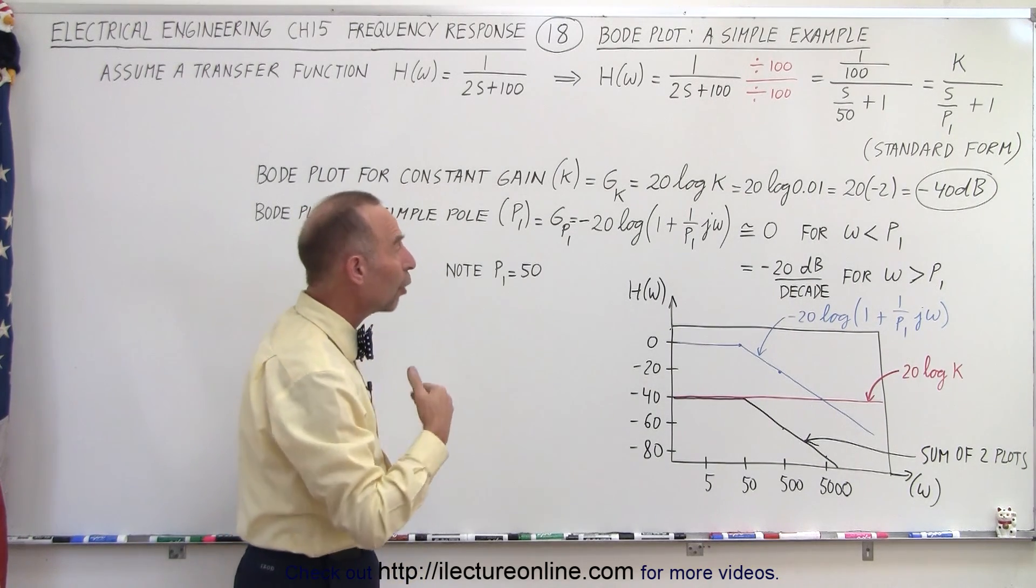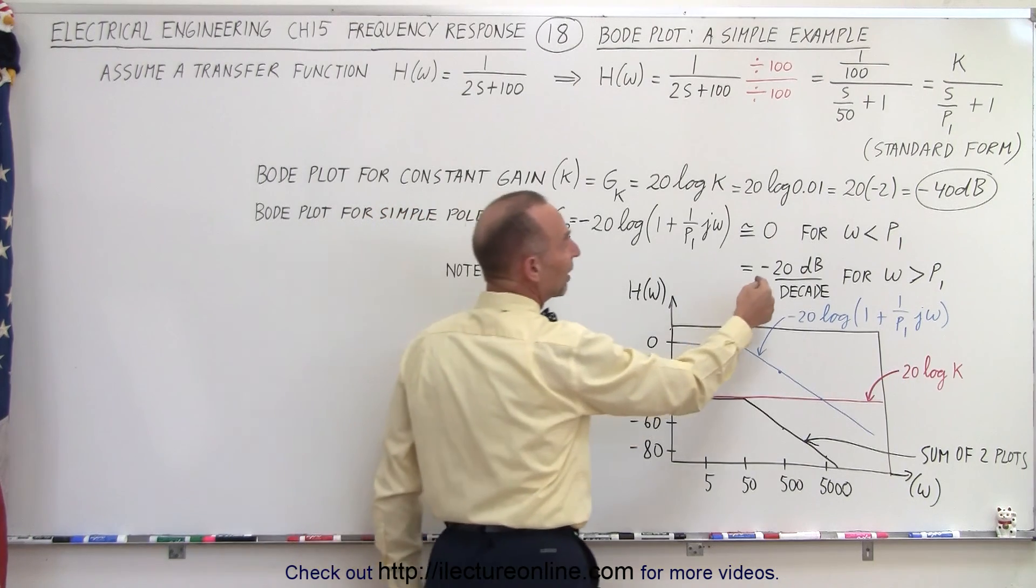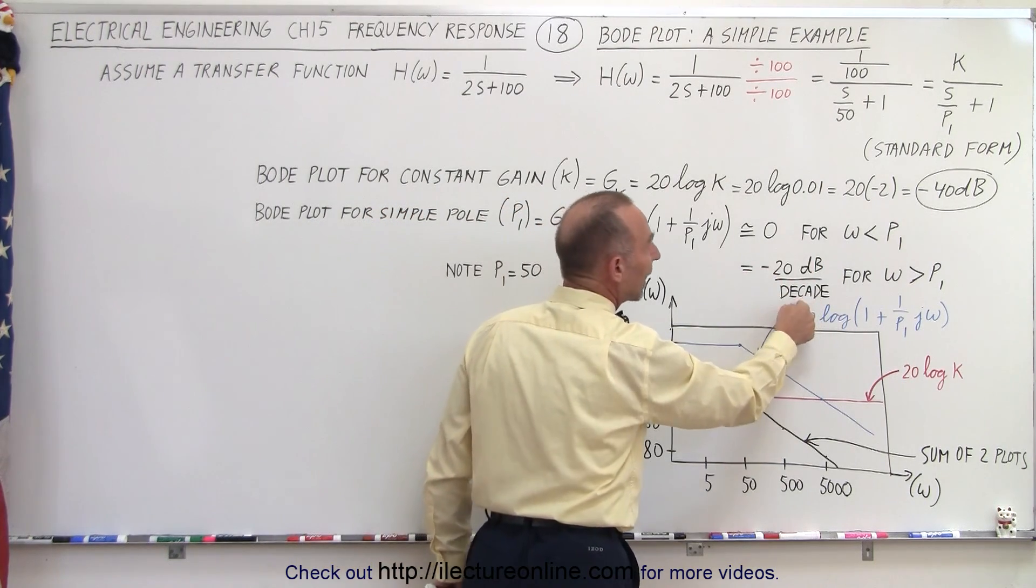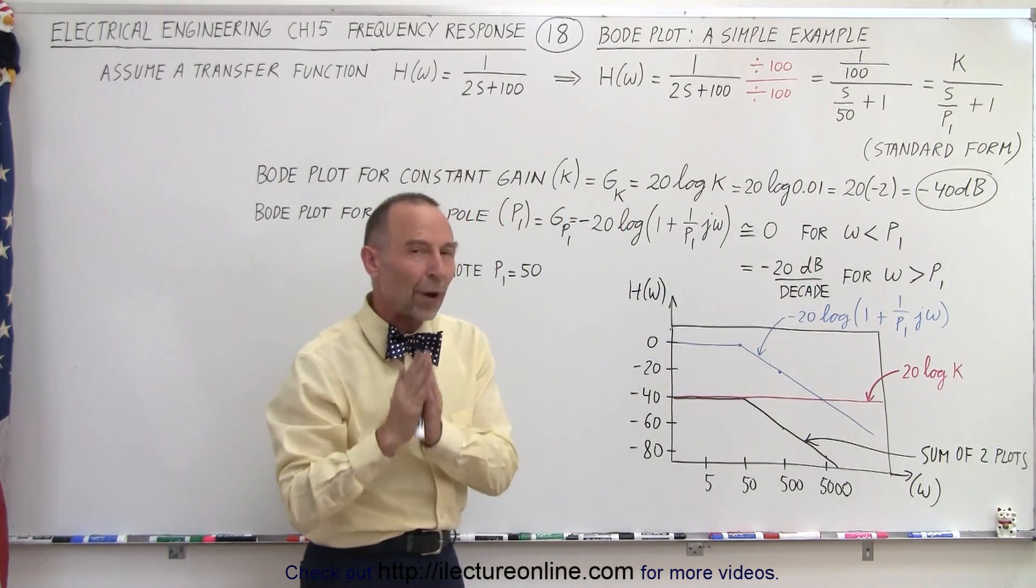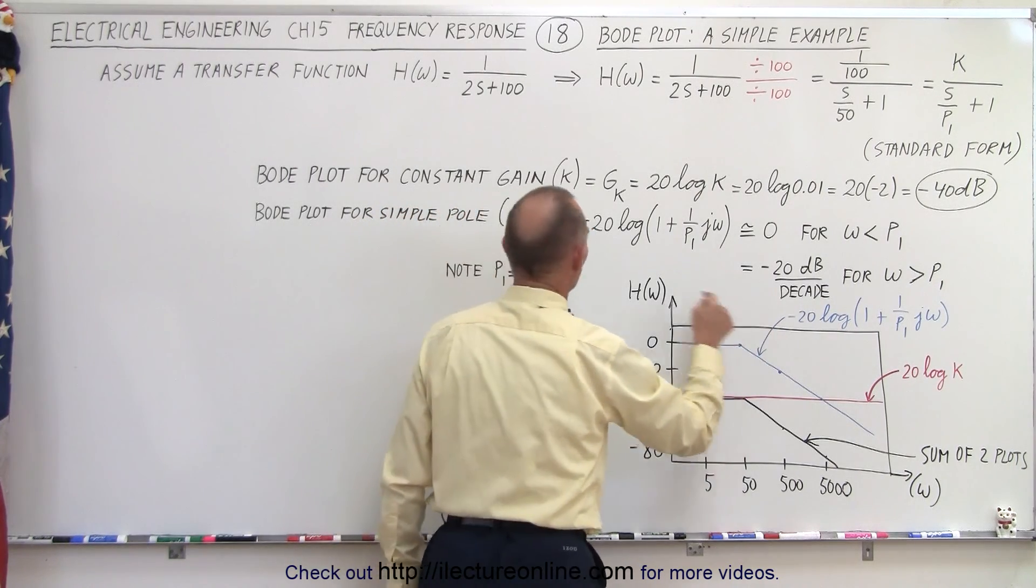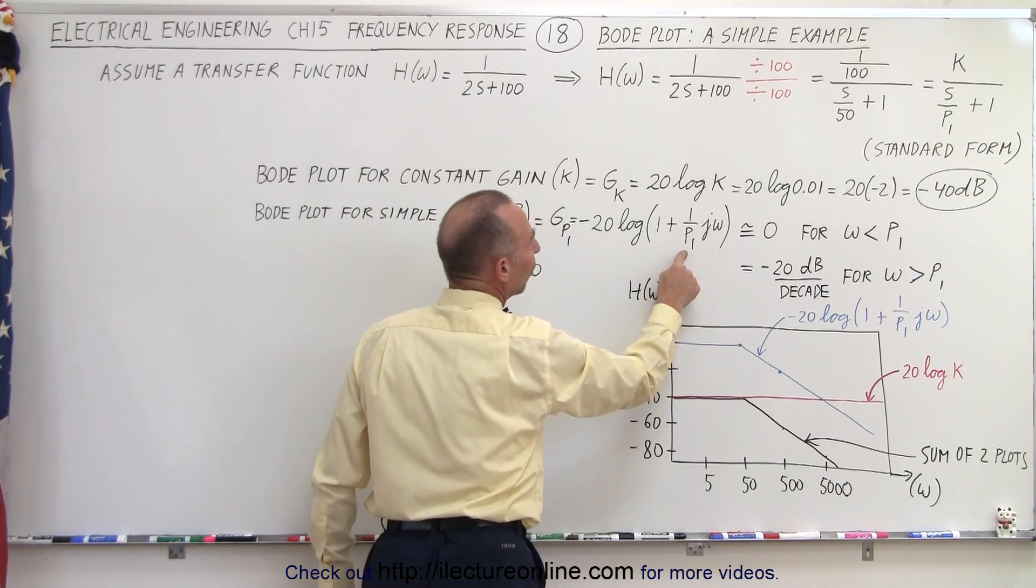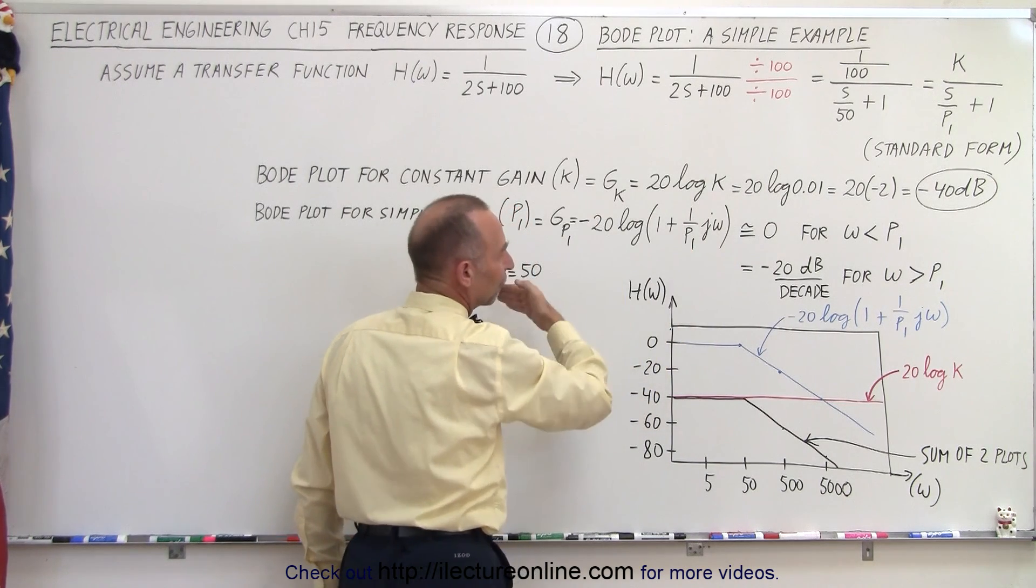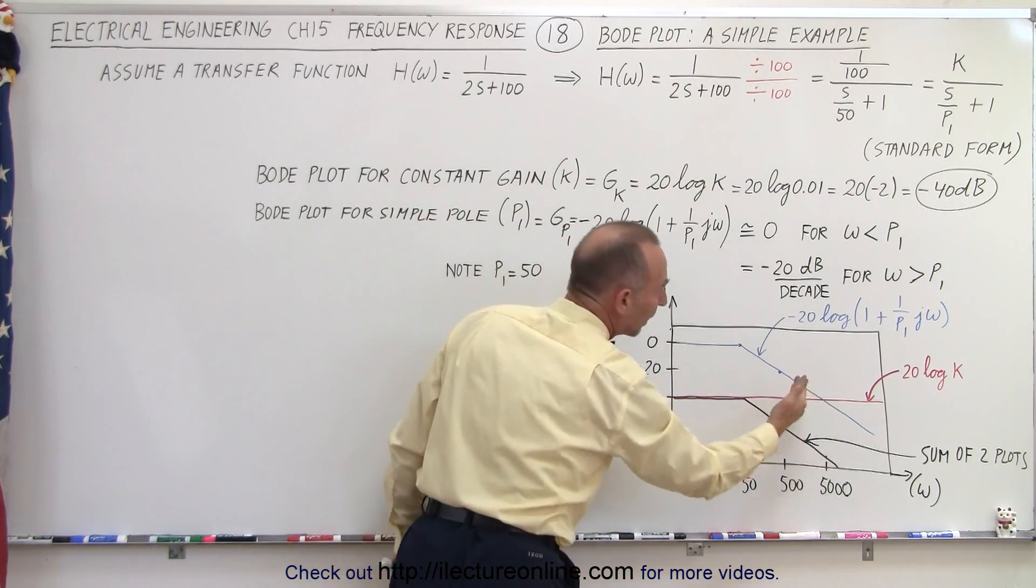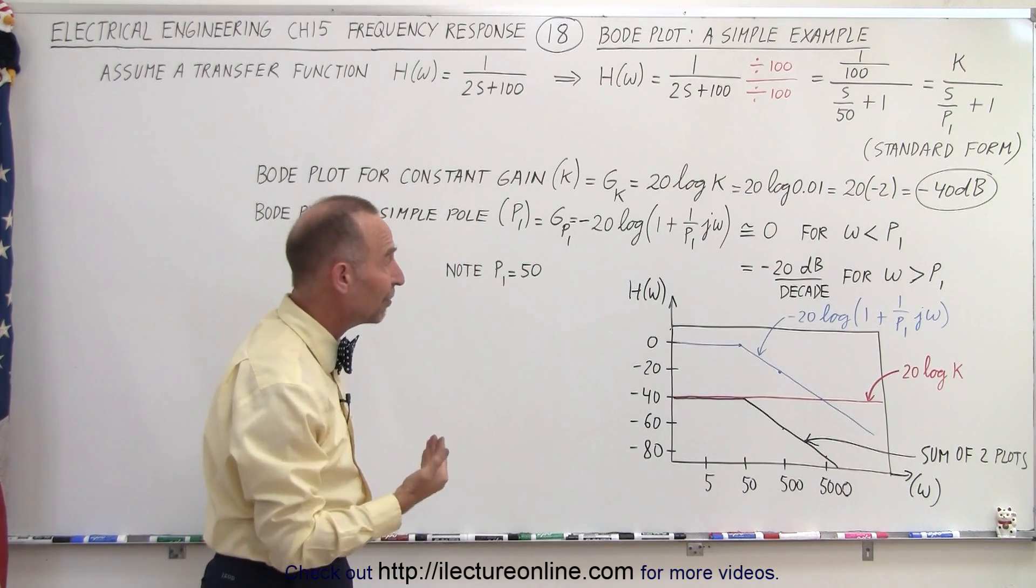Now notice that for all simple poles we will always get a minus 20 dB per decade. The only difference is where that starts. Where that starts is determined by the value right here by the value of P1. In this case P1 was equal to 50.